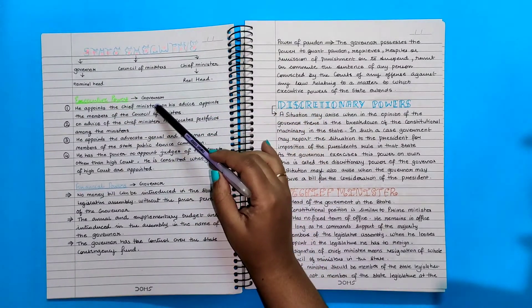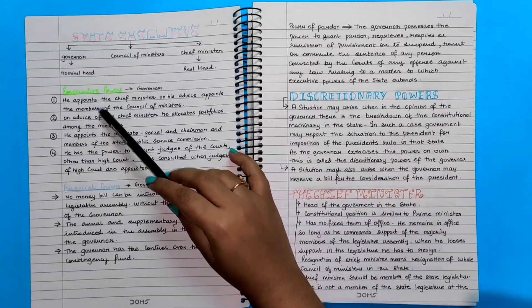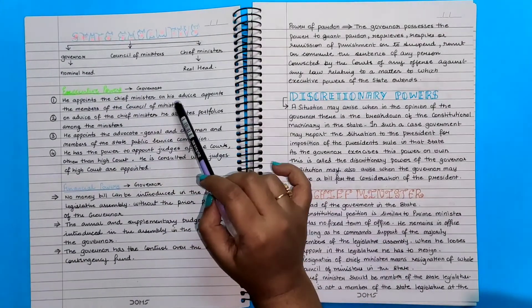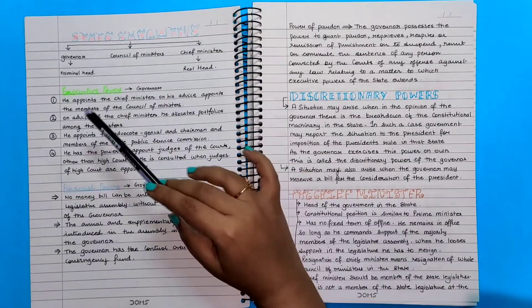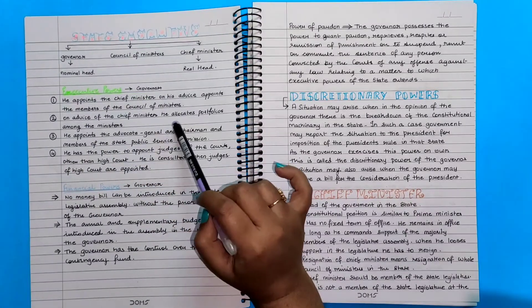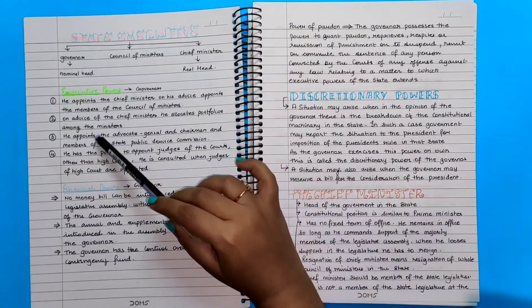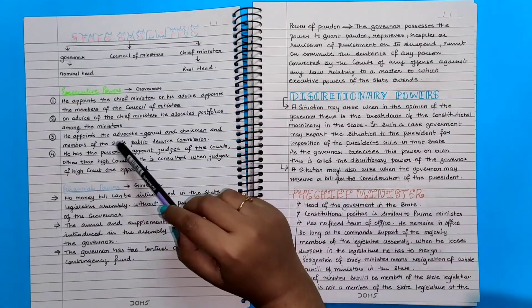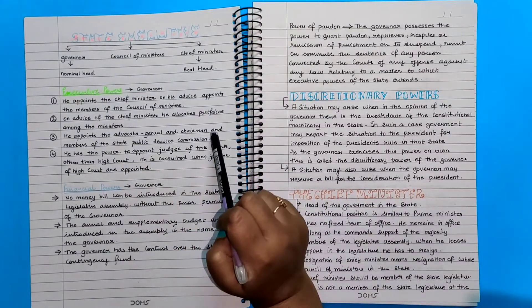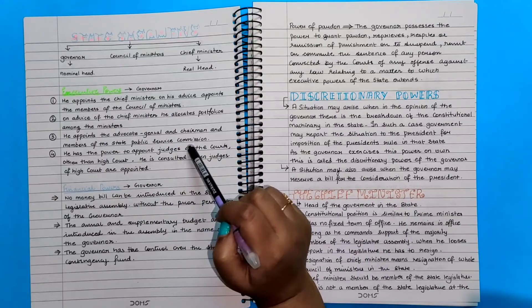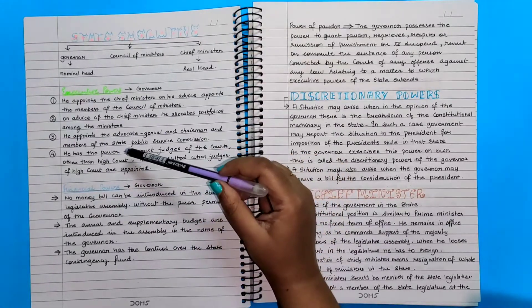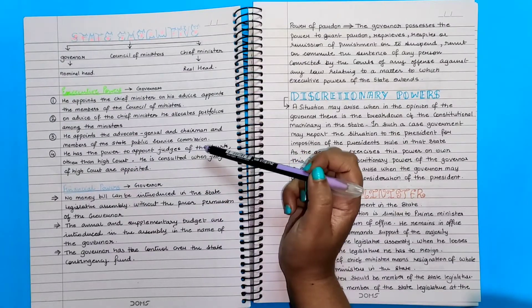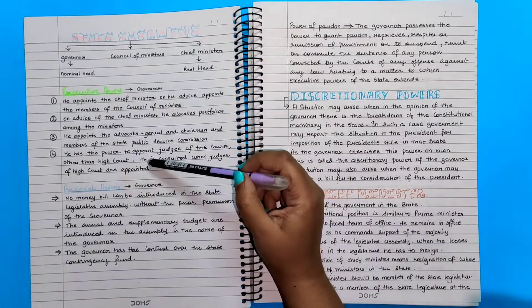Executive powers of governor: He appoints the members of the council of ministers on advice of the chief minister. He allocates portfolios among the ministers. He appoints the advocate general and chairman and members of the state public service commission. He has the power to appoint judges of the court other than high court. He is consulted when judges of high court are appointed.